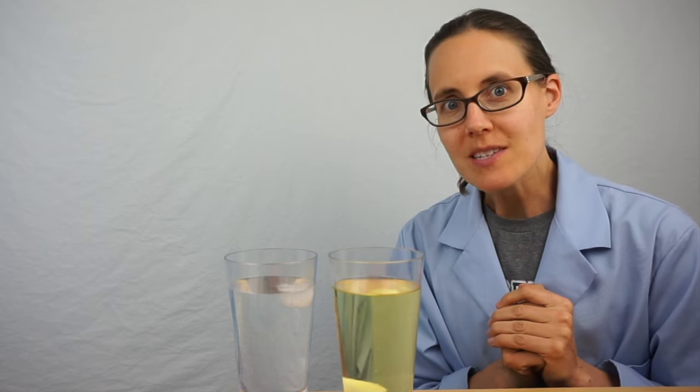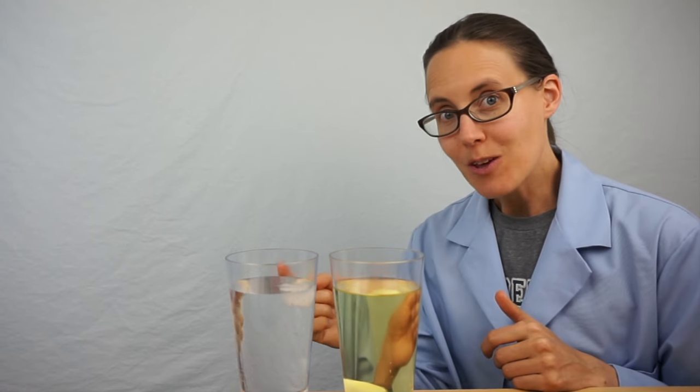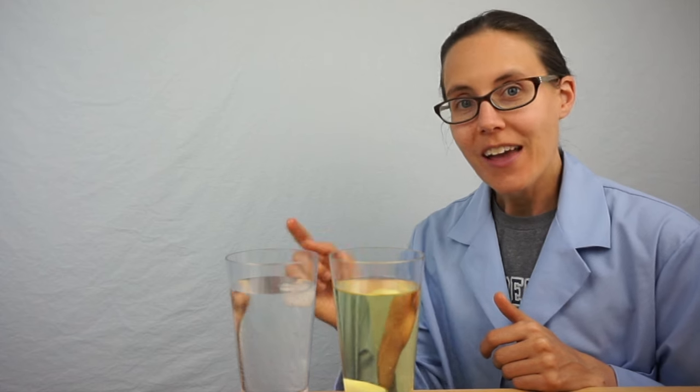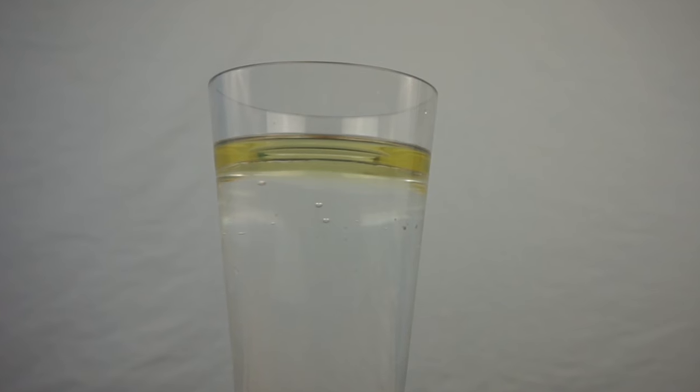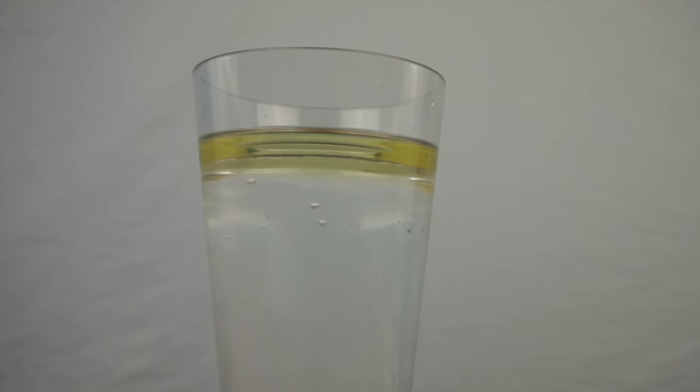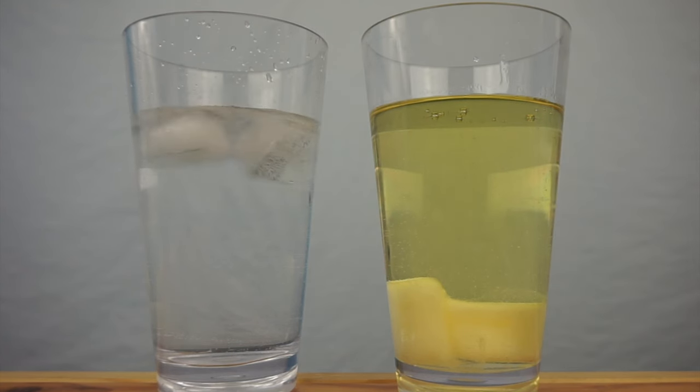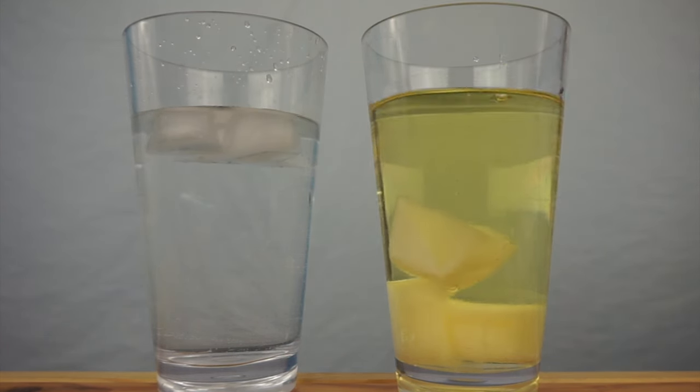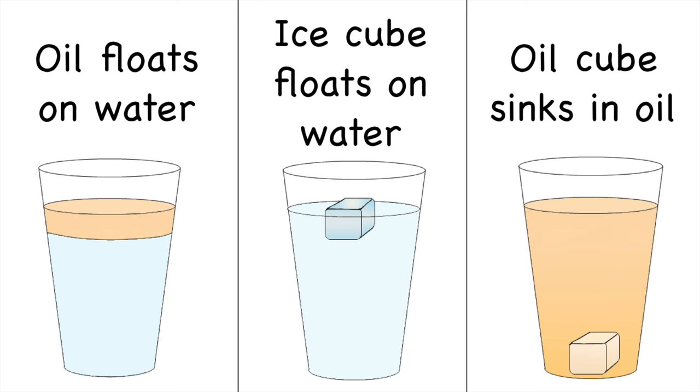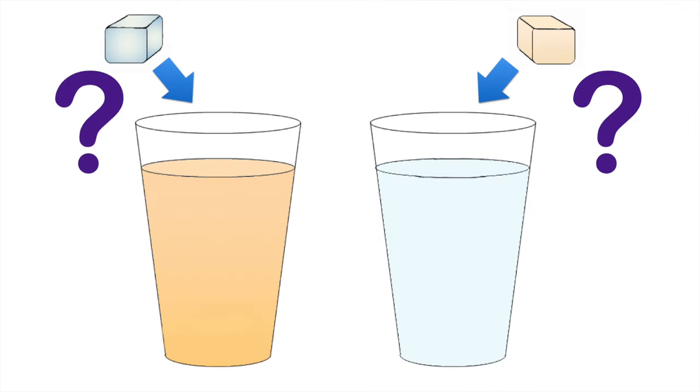But what do you think will happen if we switch things up? What if we put a cube of frozen oil into the water? And what if we put an ice cube into the oil? Remember, if you mix oil and water, the oil will float. It is less dense than liquid water. Ice also floats in water, but solid oil sinks in oil. Keeping these things in mind, what do you think will happen? Pause the video, make a prediction, and then start it up again to find out.